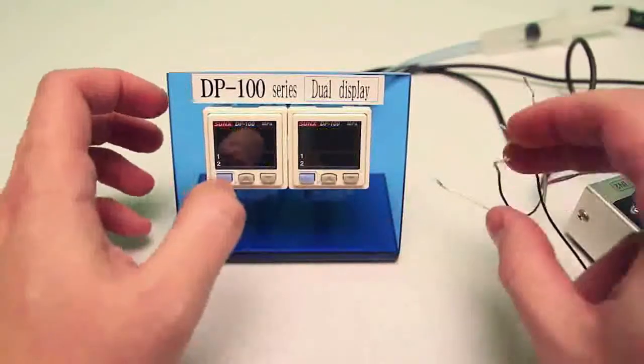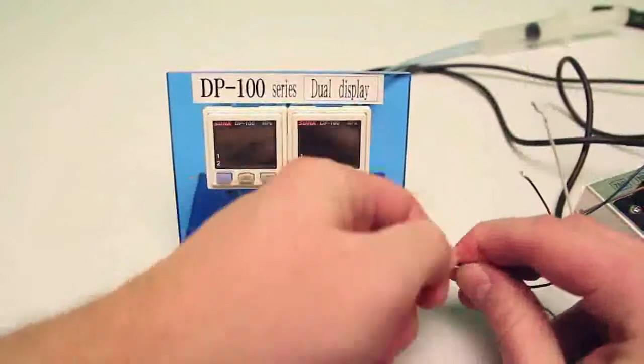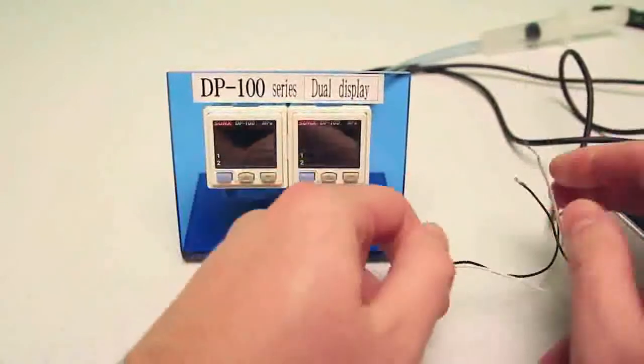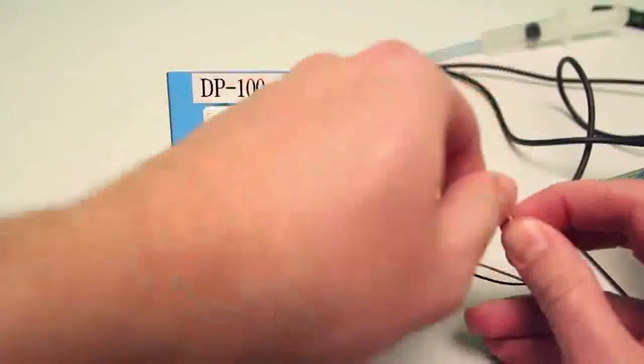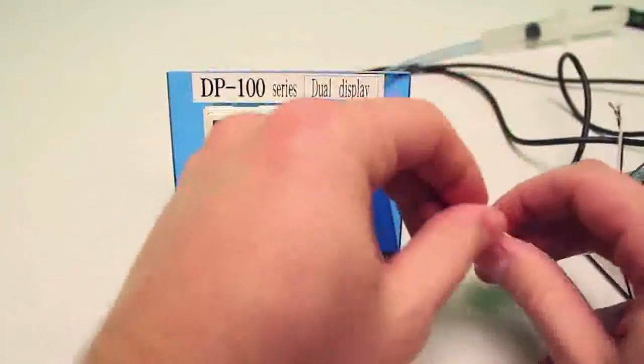I'm going to cut my power and again I'm going to cross my output wires so black to white and black to white. Okay so when I turn the power back on this one popped off.